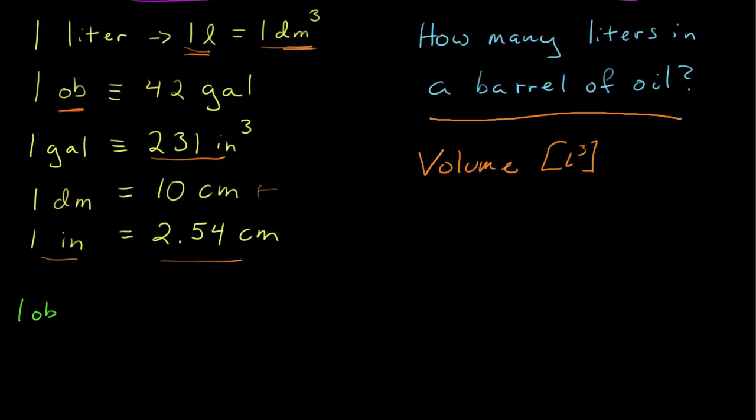I'm going to start with one oil barrel and multiply it by a ratio made from the above conversion such that the oil barrel unit cancels. That would be 42 gallons divided by one oil barrel, which gets me into units of gallons.